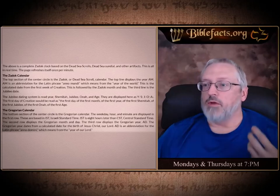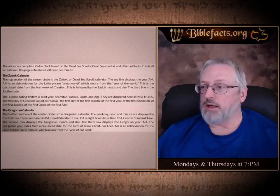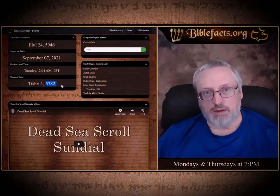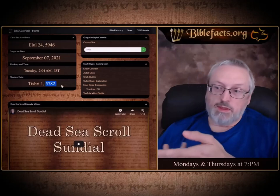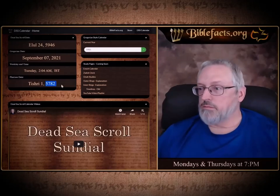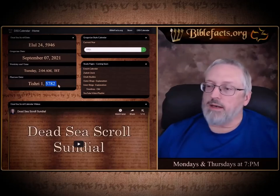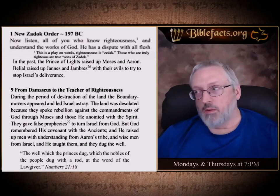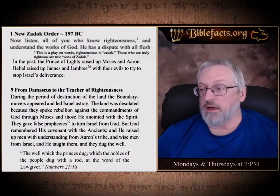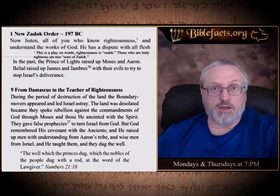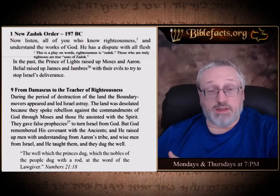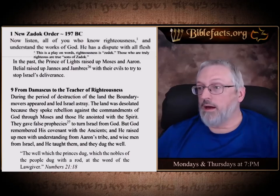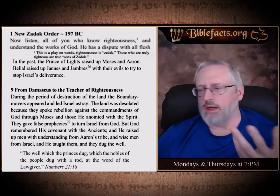If the current Pharisee calendar is right, it's been 5,782 years since creation, because this would be their new year starting at midnight tonight. But if the Zadok calendar is correct, the year 6,000 — which is possibly the year of the Second Coming according to their calculations and prophecies — might be 218 years away, whereas looking at it another way, it's less than 54 years away.